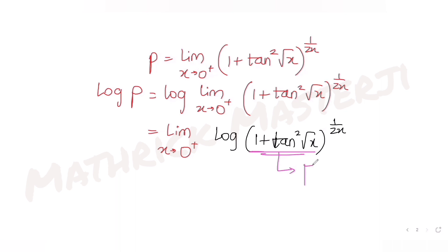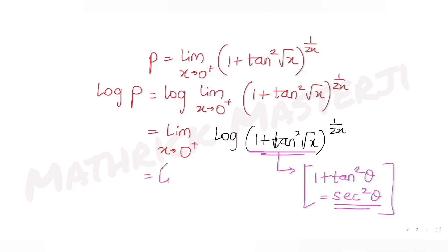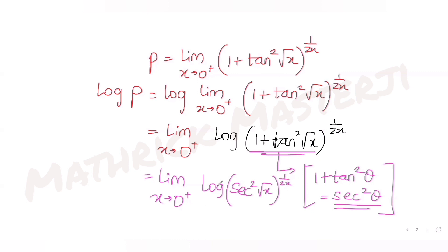Now I know the identity that says 1 + tan²θ is nothing but sec²θ. So using that identity, I get: limit x tends to zero plus, log of sec²(√x) raised to 1 over 2x.